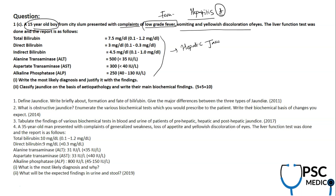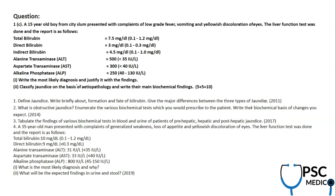The most likely diagnosis, based on the clinical scenario, is hepatitis A. Looking at the LFT, both total direct and indirect bilirubin fractions are elevated, which supports the diagnosis of hepatic jaundice. The next part of the question asks to classify the jaundice on the basis of etiopathology.